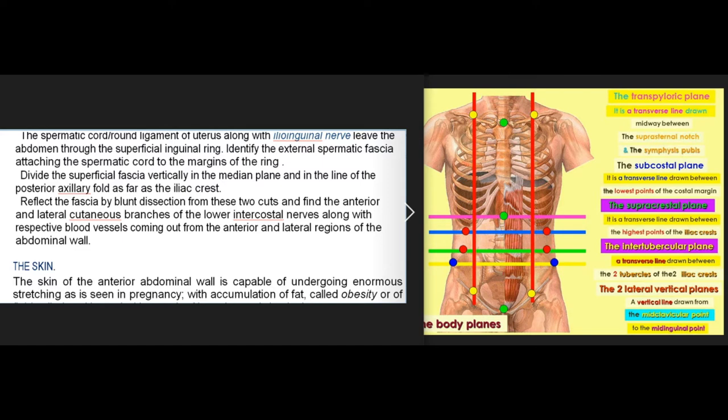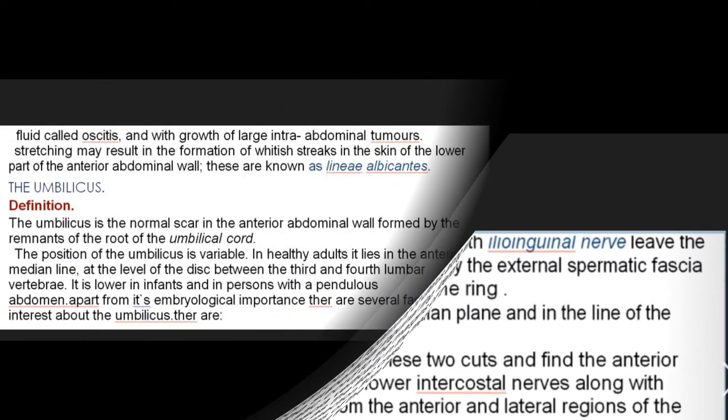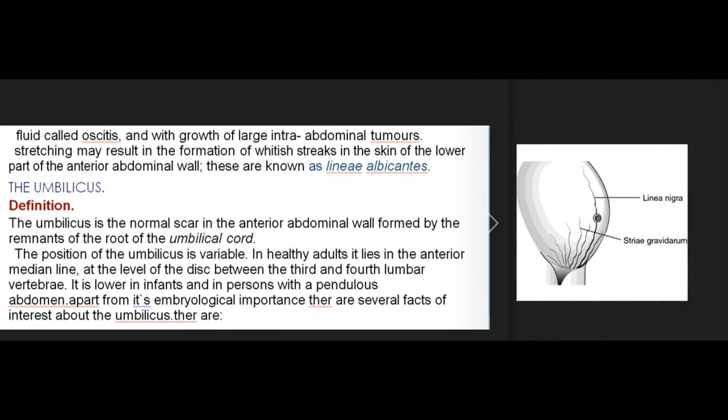The skin of the anterior abdominal wall is capable of undergoing enormous stretching as is seen in pregnancy, with accumulation of fat called obesity, or fluid called ascites, and with growth of large intra-abdominal tumors. Stretching may result in the formation of whitish streaks in the skin of the lower part of the anterior abdominal wall; these are known as lineae albicantes.